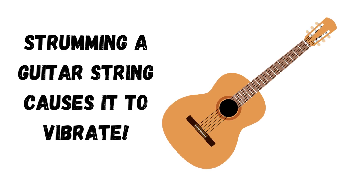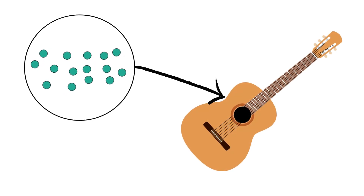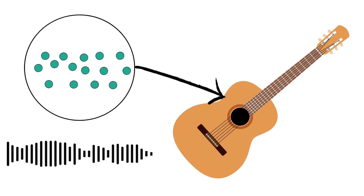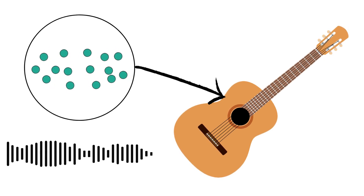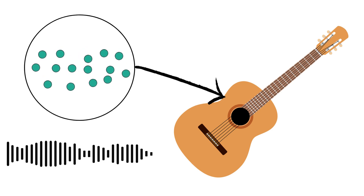Sound is just a vibration of molecules moving through matter. When we zoom into the air particles around a vibrating guitar, the guitar starts moving the air particles and vibrating them — that is what a sound wave is. It transfers energy through a medium. A medium is what sound travels through, and in the case of a guitar, the medium is air — that's how you're able to hear me from your speakers right now.